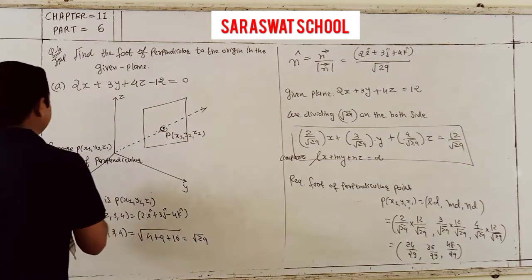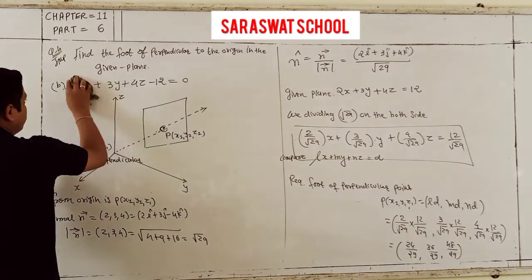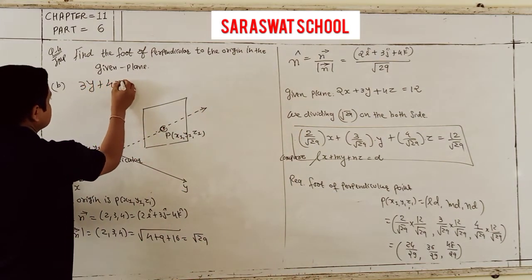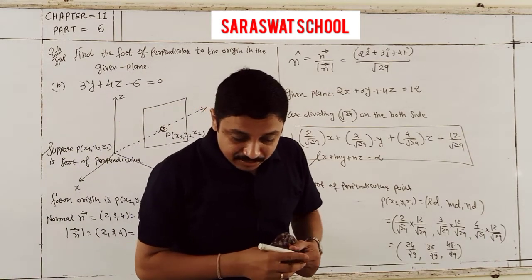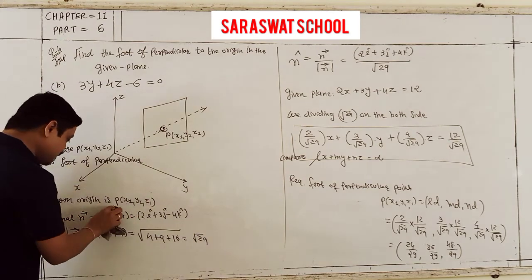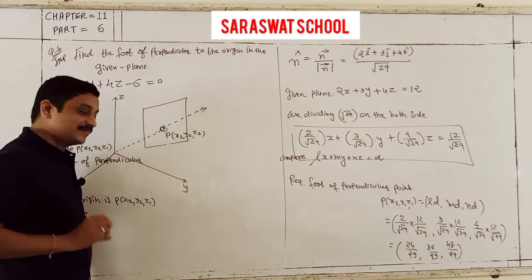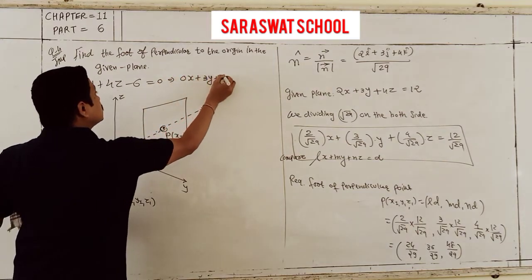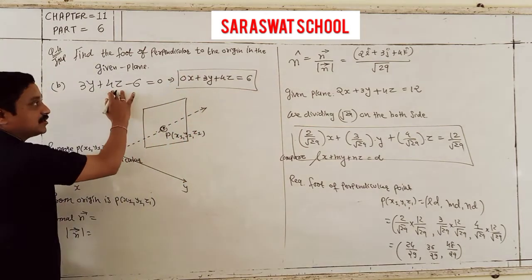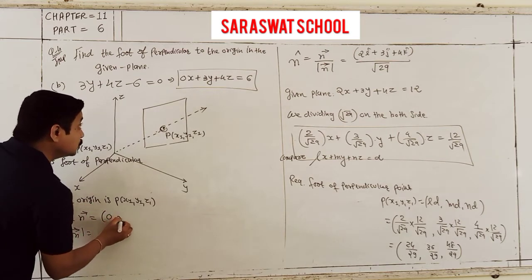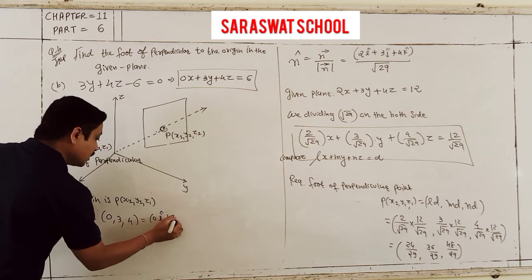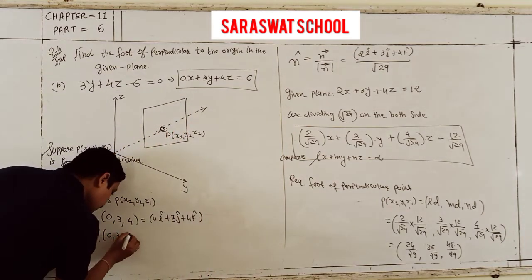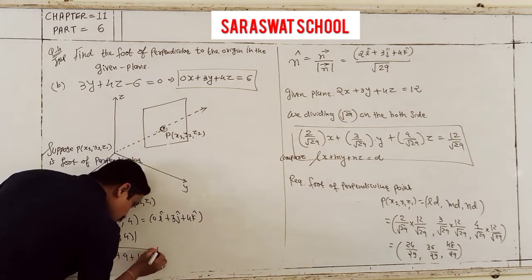Part B: equation of plane is 3y plus 4z minus 6 equals 0, which we write as 0x plus 3y plus 4z equals 6. The normal is (0, 3, 4), and its magnitude is root of (0 plus 9 plus 16) which is root 25, equal to 5. So n-cap direction cosines are (0/5, 3/5, 4/5) and D is 6/5.